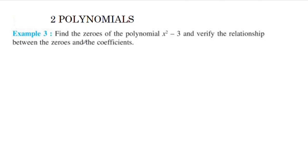We will find the zeros of the polynomial. The polynomial is of degree 2 — x² - 3 — where the highest power is 2. So this is a quadratic polynomial. How many zeros does a quadratic polynomial have? There are two zeros.